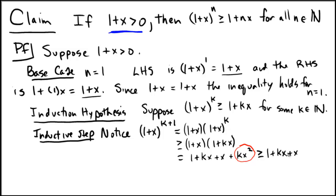And all I've done there is I've ignored the part in the circled red because that was positive, and now I've made something that's actually potentially smaller, and I can just factor out the x from that last part and say that's the same as 1 times k plus 1 x. And that's exactly what we wanted, right?